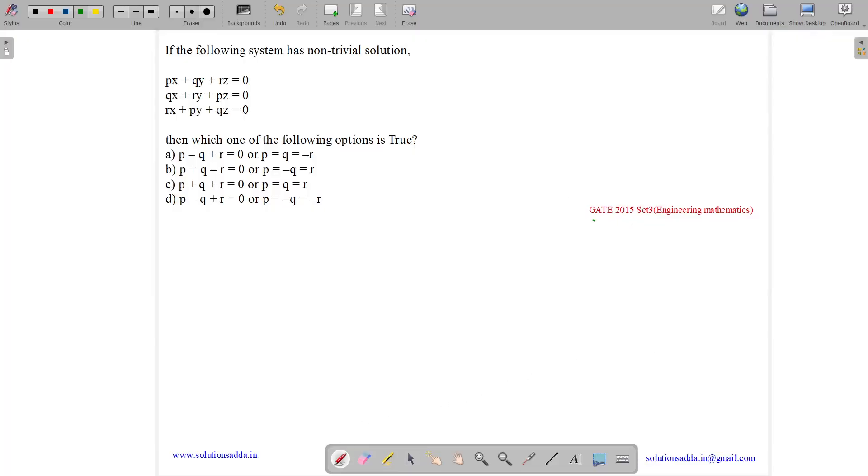This question belongs to engineering mathematics subject and was asked in Gate CSE 2015 set 3. The question states: if the following system has non-trivial solution, then which of the following options is true?